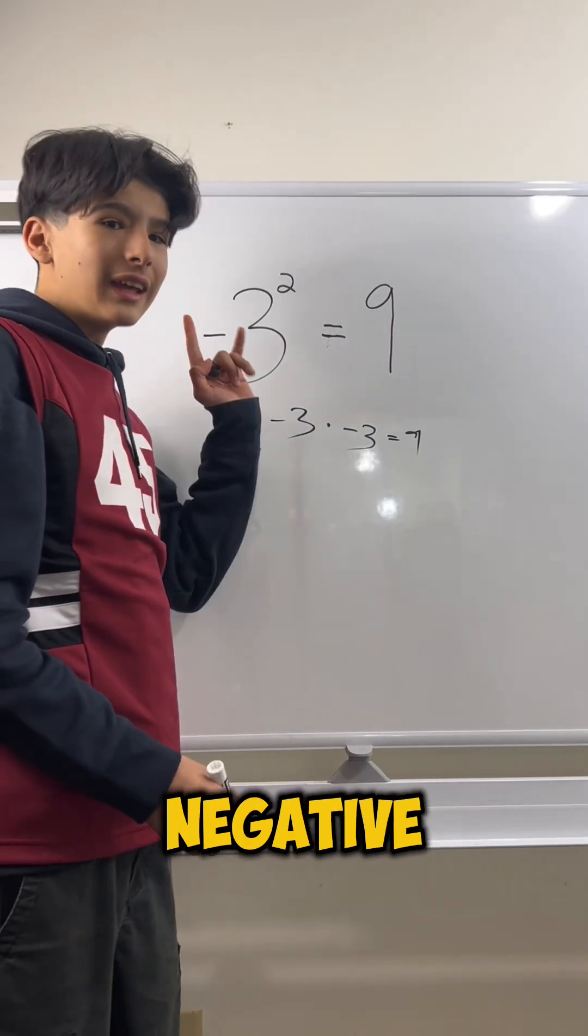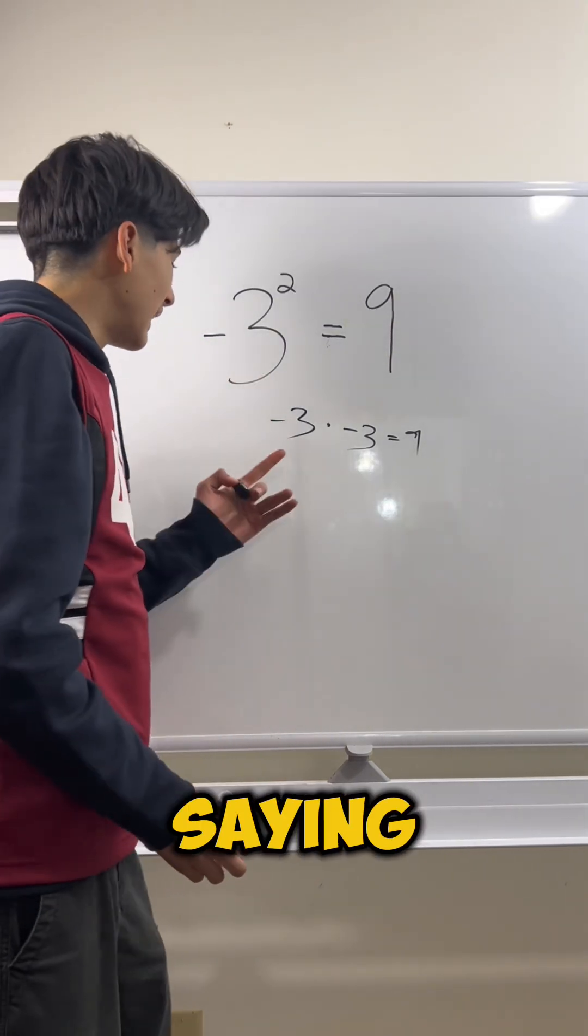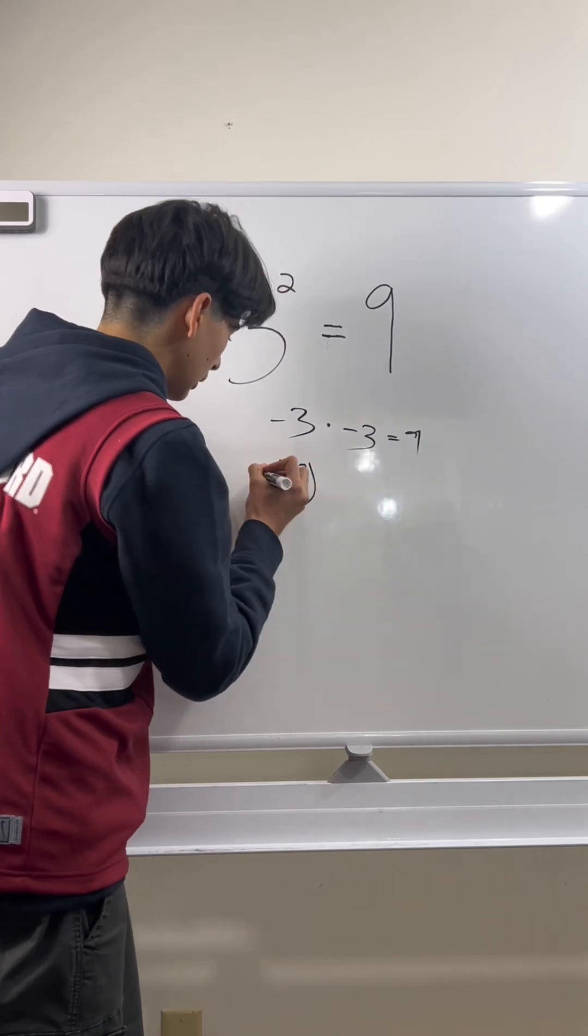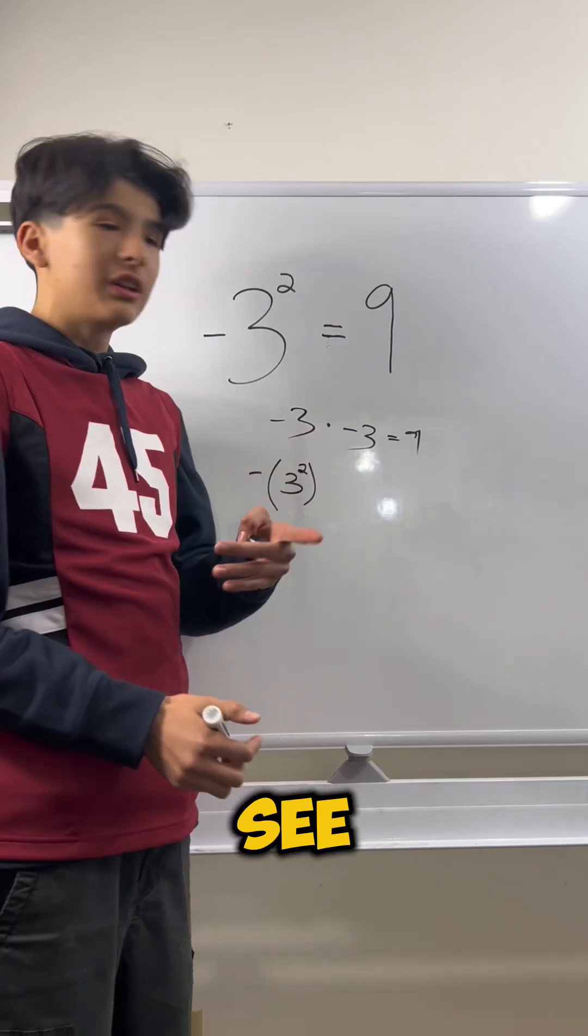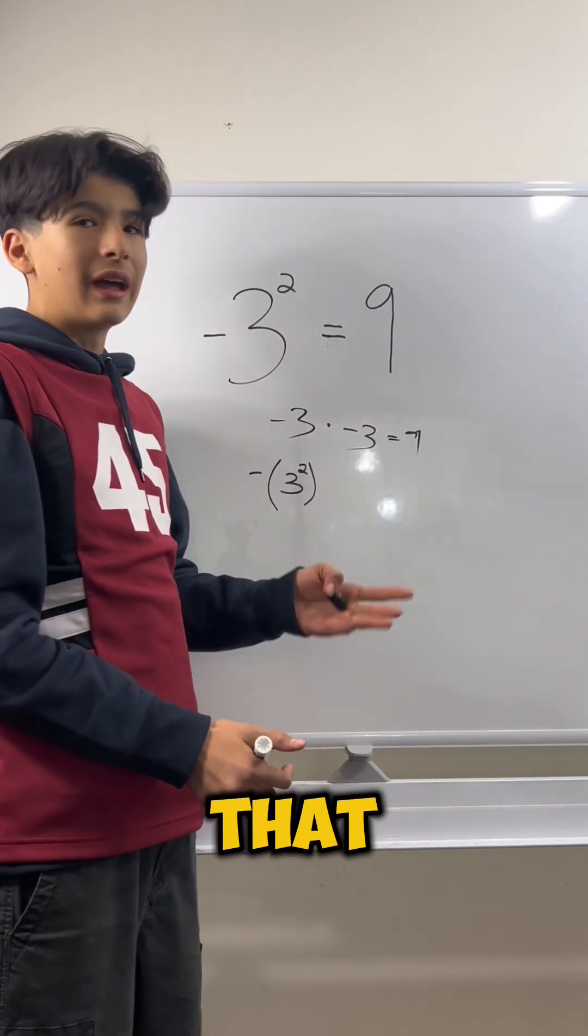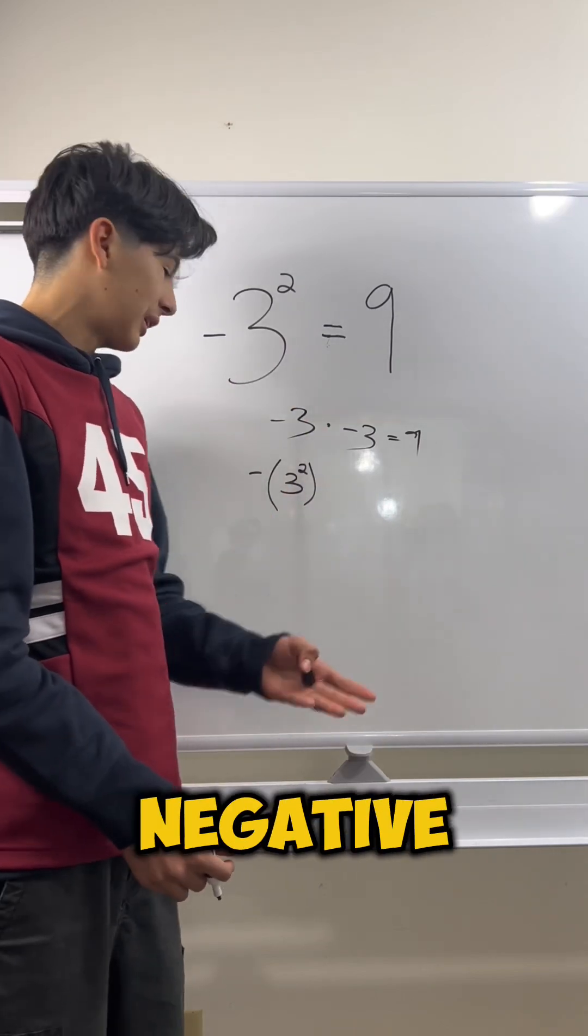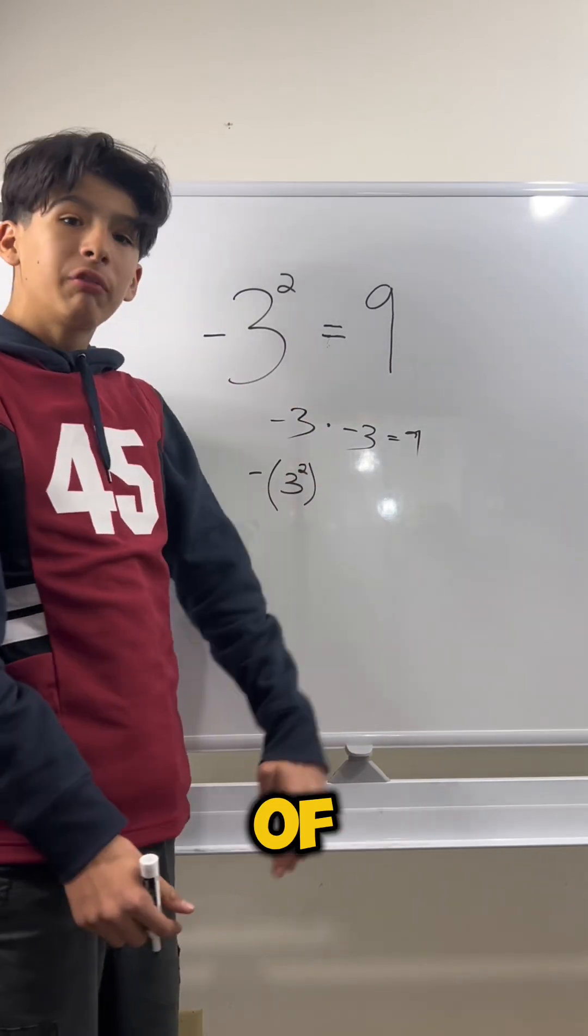But this isn't saying negative 3 times negative 3. It's saying the negative of 3 squared. So when you just see a negative sign next to the 3 like that, it's not saying negative 3 times negative 3. It's saying the negative of 3 squared.